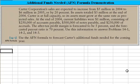At the end of 2004, current liabilities were $1 million, consisting of $250,000 of accounts payable, $500,000 of notes payable, and $250,000 of accruals. Its after-tax profit margin is forecasted to be 5%, and the forecasted payout ratio is 70%. That means they expect to pay $0.70 of every dollar earned in profits and retain 30%.